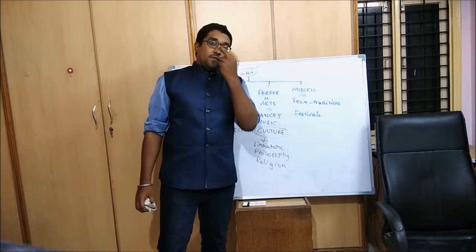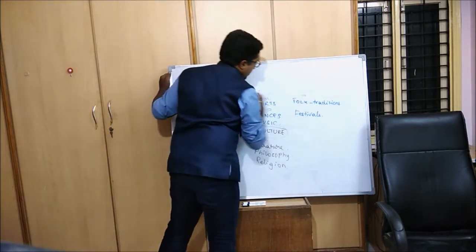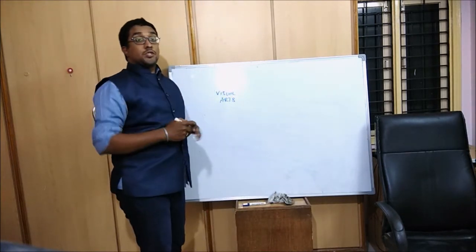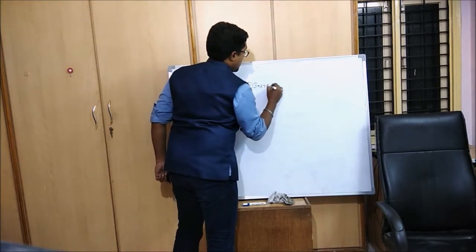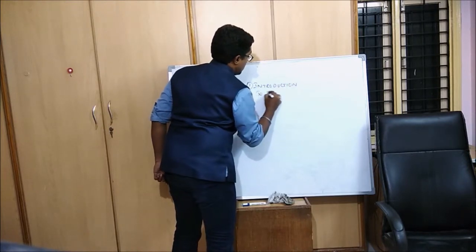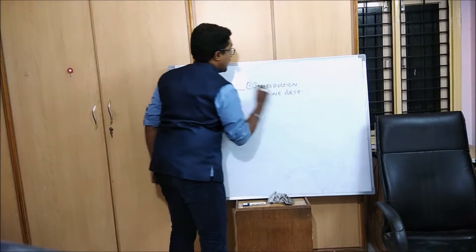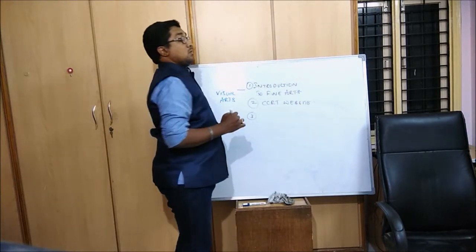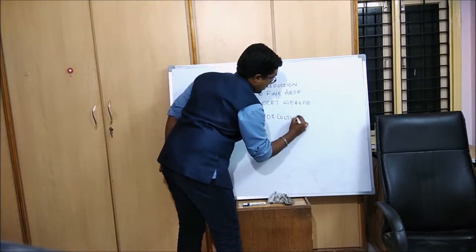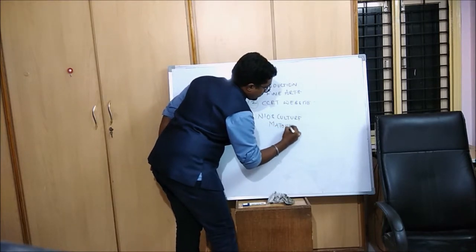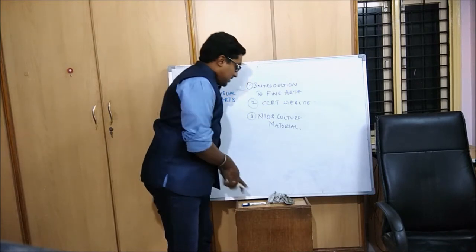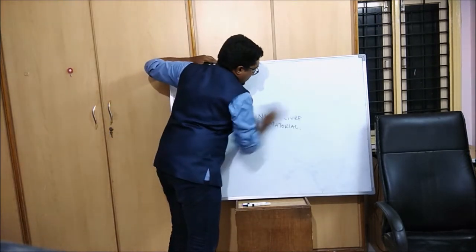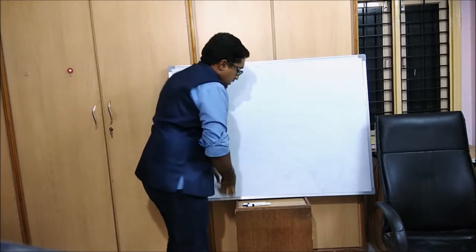For today's class, we will be primarily seeing the Visual Arts dimension of Indian Art and Culture. For your information, there are a few books which need to be referred to. Number one, Introduction to Fine Arts — very good for architecture. Number two, the CCRT website. Number three, NIS culture material. The most difficulty with Indian Art and Culture is we don't actually have a single book. Indian Art and Culture is spread across different books, different traditions, and different sources.